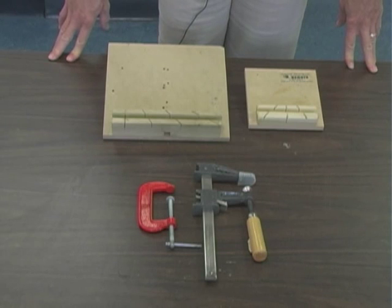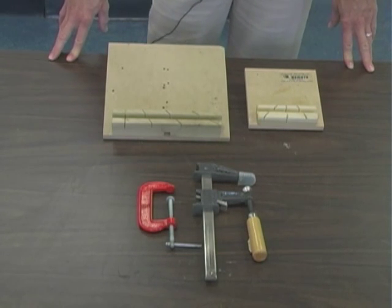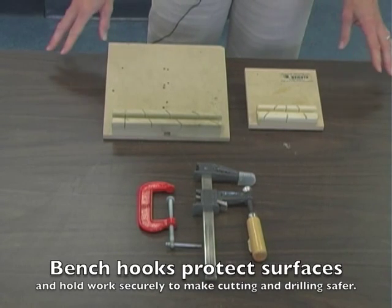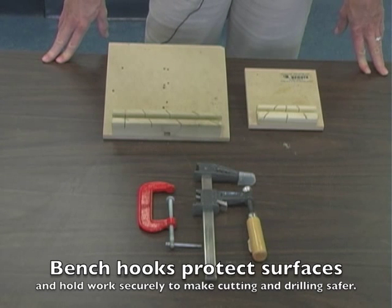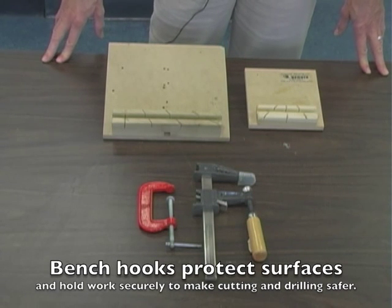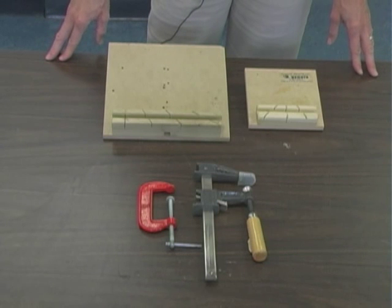There are two kinds of bench hooks, two different sizes that come in the kit. These bench hooks are for the protection of surface areas in your classrooms, either tables or desks.